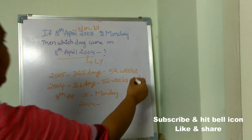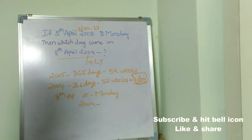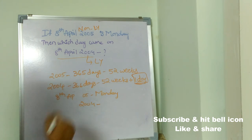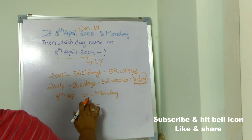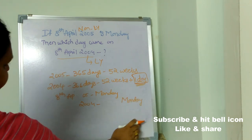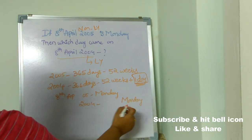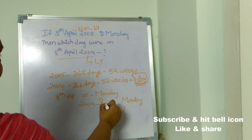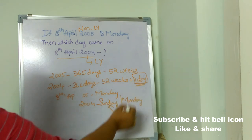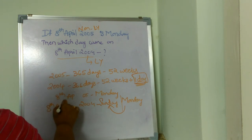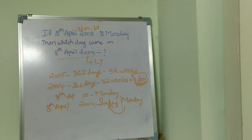We need to consider this one odd day from 2004 and move one day backwards in the week. Since 8th April 2005 is Monday, we move one step back, which gives us Sunday. With the help of this odd day we moved one step backward and got the answer — 8th April 2004 is Sunday.